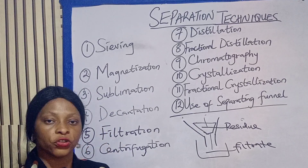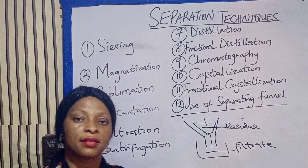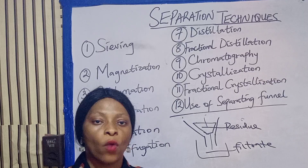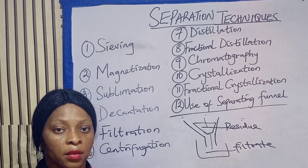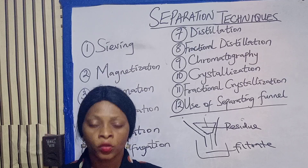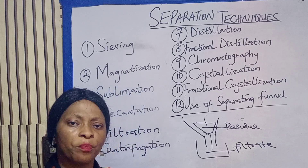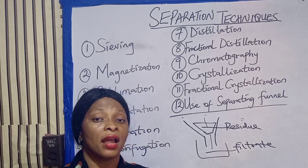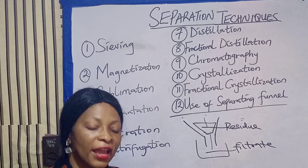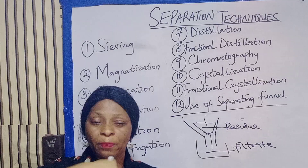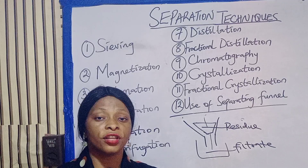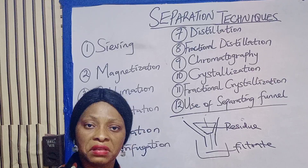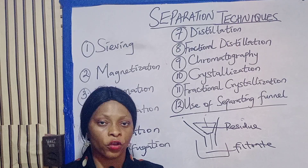We move to centrifugation. Centrifugation is used to separate blood cells from plasma. It is mostly used in hospitals when they want to separate blood components. When you want to know your PCV or other components of your blood, you go to the medical lab. The lab scientist takes a portion of your blood, puts it in a centrifuge machine that spins, and the blood particles separate into different layers telling you your PCV, the amount of protein, urea, and other components present.